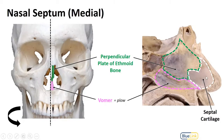The septum is completed by septal cartilage, which is hyaline cartilage. Keep in mind that much of the anterior nose is made up of hyaline cartilage, so it's much more mobile. As you get more posteriorly, it is a lot more bony and less mobile.